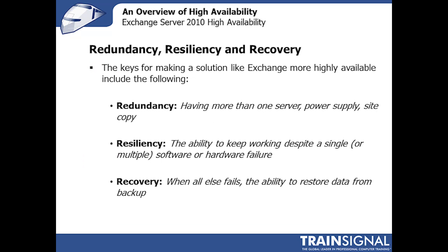Redundancy, resiliency, and recovery are the keys for making a solution like Exchange more highly available. Redundancy involves having more than one server, power supply, or site copy — having multiple copies of data and multiple ways for servers to stay up if hardware or software fails. Resiliency is the ability to keep working despite single or even multiple software or hardware failures. The two work hand in hand but have different concepts, and an illustration will help clarify the difference between them.